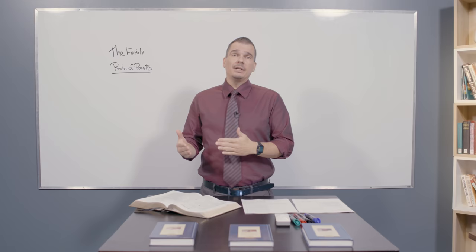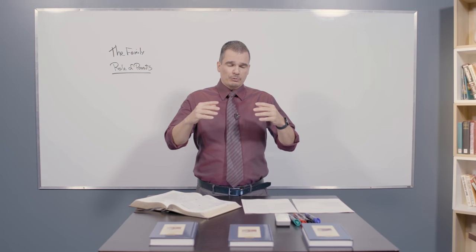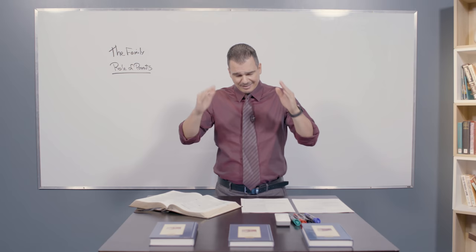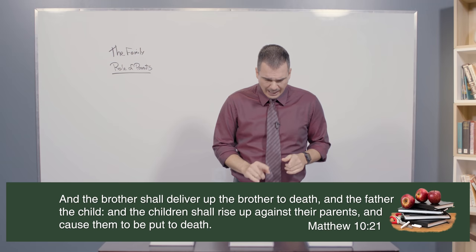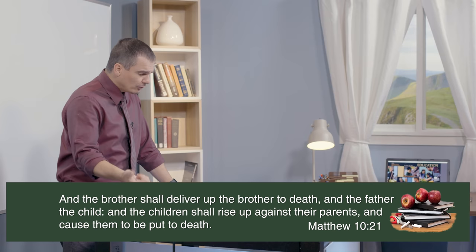The devil knows that the best way to destroy the church, destroy humanity, is to destroy the family circle. And he attacks it mercilessly. And the easiest way to do that is to attack the head of the family. Because if you get the head of the family, the rest of the family will fall apart. And so man and husband are the target of the devil. And he does so in every possible way. Jesus said this would be a sign of the end. Matthew 10, 21, we read,